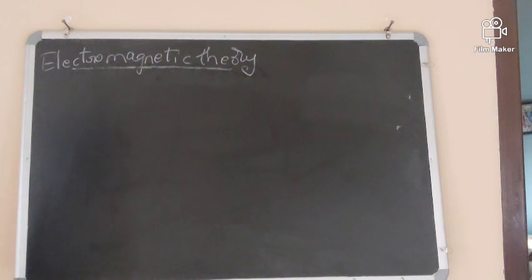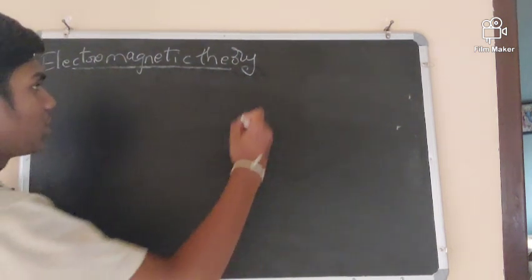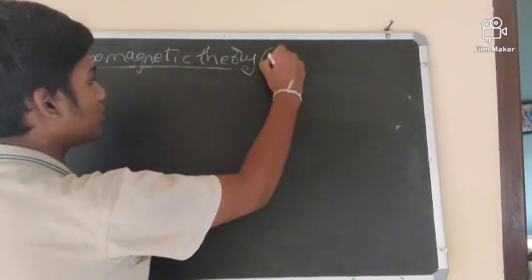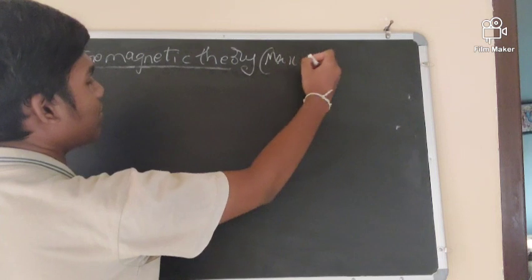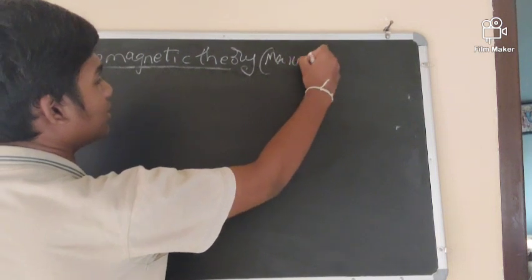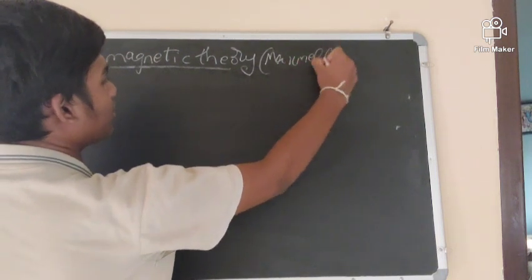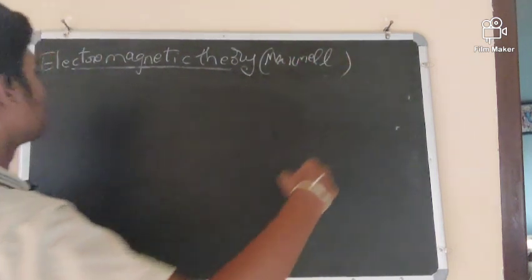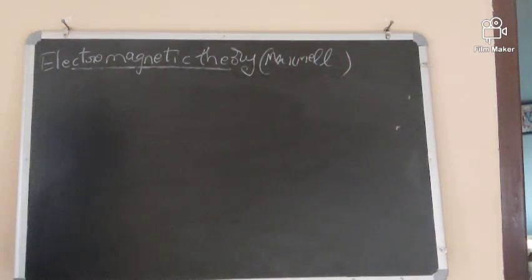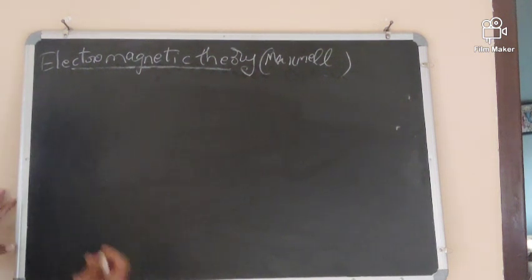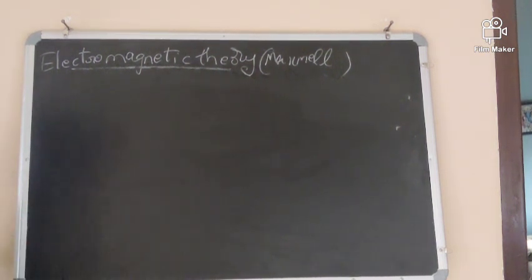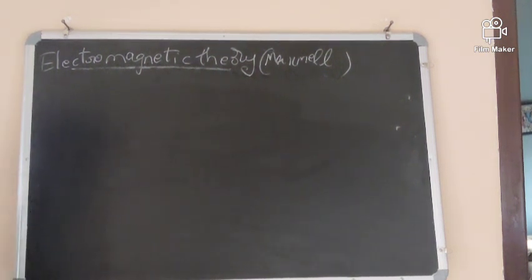Electromagnetic Theory. It was proposed by Maxwell — not a cricketer, James Clerk Maxwell. So according to Electromagnetic Theory, when any charged particle accelerates, it produces two fields.